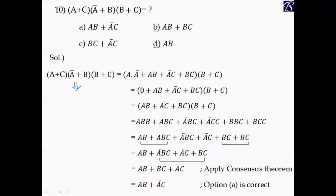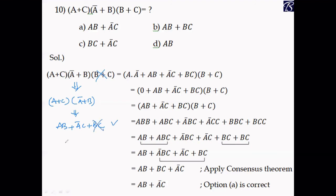Shortcut: You can apply the consensus theorem directly to the original expression. Observing that three variables are each repeated twice with one variable in complement form, the redundant term is identified immediately. Multiplying out A·Ā = 0, you get AB + ĀC + BC, and applying consensus theorem again, BC is redundant. Directly, AB + ĀC — option A is correct.